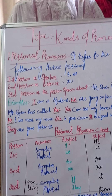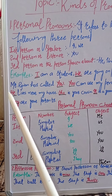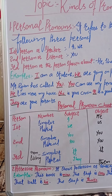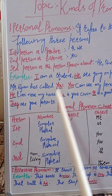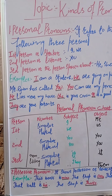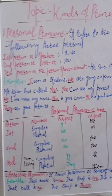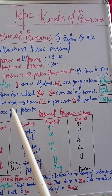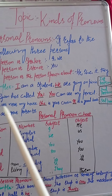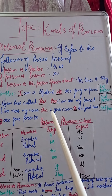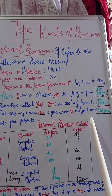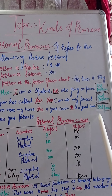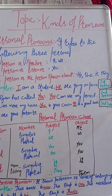Now third person: 'He lives near my house. She is your cousin. It's a good book. They are your parents.' اب ہم کسی کے بارے میں بات کر رہے ہیں — وہ ہے third person۔ جب ہم کسی کے بارے میں بات کرتے ہیں: وہ میرے گھر کے سامنے رہتا ہے، وہ میری cousin ہے، یہ اچھی کتاب ہے، وہ میرے parents ہیں — وہ ہوتا ہے third person۔